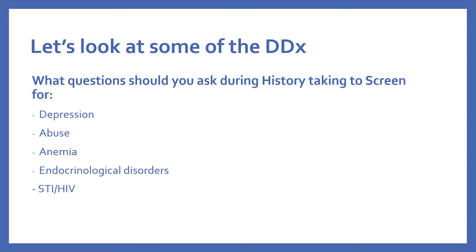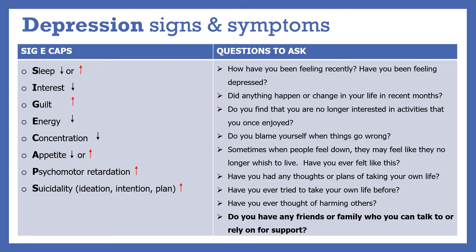Let's look at some of the differential diagnoses, particularly what questions you should ask when screening for depression. Keep in mind the signs and symptoms and observe the patient for psychomotor retardation, for example slowed speech and thought. Some questions you may ask are: how have you been feeling recently? Have you been feeling depressed? Did anything happen or change in your life in recent months? Remember to ask about the support system — do you have any friends or family who you can talk to?